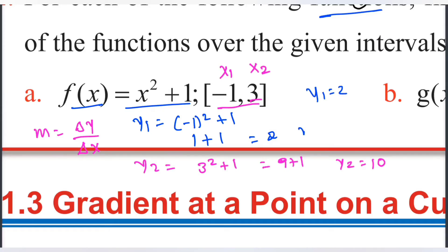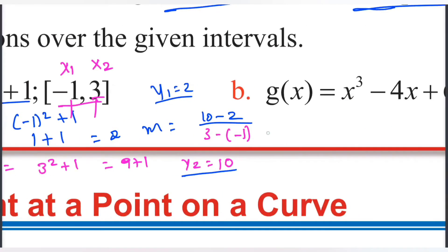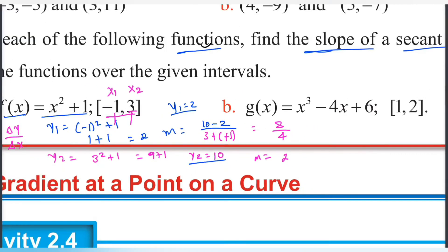Change in y, y2 minus y1, 10 minus 2 over x2 minus x1, 3 minus negative 1. 8 over 3 minus negative 1 plus 1, which is 4. 8 over 4 equals 2. So the slope is 2.